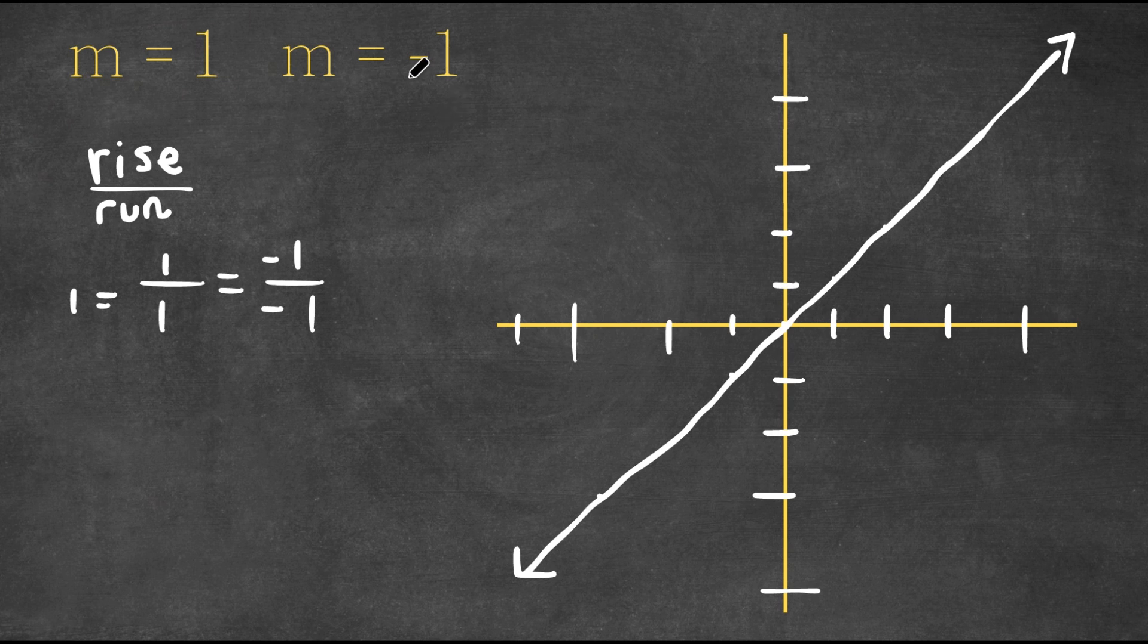Now let's try m equals negative one. So negative one in fraction form, this would be negative one over one, right?